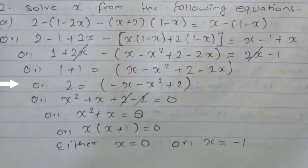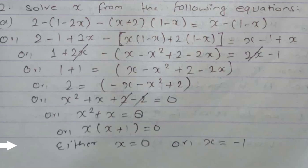1 + 1 = 2, so 2 = −x − x² + 2. Moving all terms to the left: x² + x + 2 − 2 = 0, so x² + x = 0. Taking x common: x(x + 1) = 0. Therefore x has two values: x = 0 or x = −1.